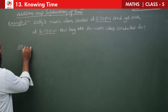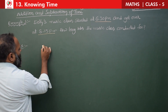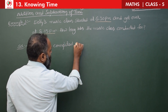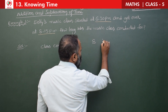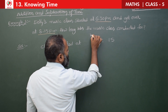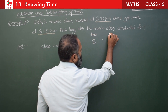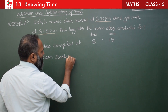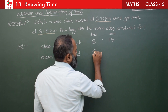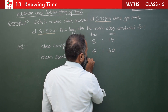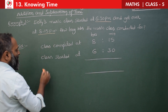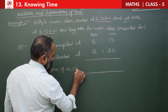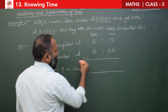Class completed at 8 hours 15 minutes, class started at 6 hours 30 minutes. For the duration of the class, we subtract: 15 minutes minus 30 minutes. We cannot subtract, since 15 is smaller than 30.